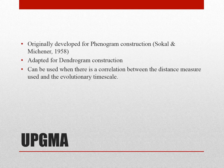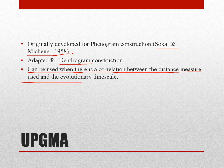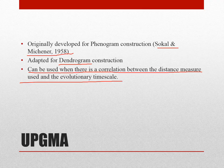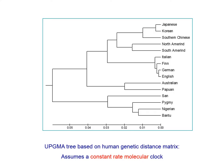The other tree method is UPGMA. The original tree was used for phenogram construction and is used for dendrogram construction. UPGMA can be used when there is a correlation between the distance measure used and the evolutionary time scale, making it more related to the evolution of a gene based on a time scale. When you construct a UPGMA tree, there is an assumption built in: the molecular clock evolves at a constant rate.